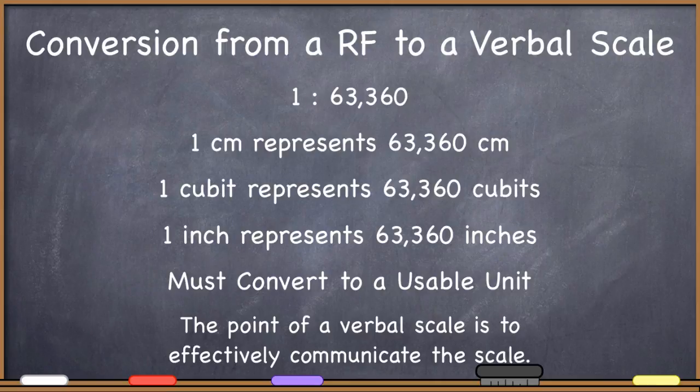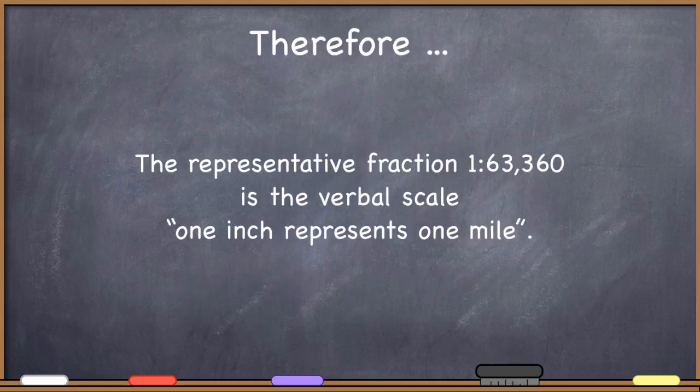Because the point of a verbal scale is to effectively communicate the scale. Of course, one of the great advantages of the representative fraction is that it can be used with any system of measurement, any unit that the user wants. And if you're communicating scale to a cartographically sophisticated audience, if the people who are using the map are GIS specialists or cartographers or so forth, they want that kind of flexibility. But very often, rather than communicating scale to an audience like that, you're communicating the scale of a map to somebody who may not be ready to use a representative fraction. They'd much rather have one of the statement scales where it tells them one of some unit represents some number of another unit on the actual planet that is usable to them.